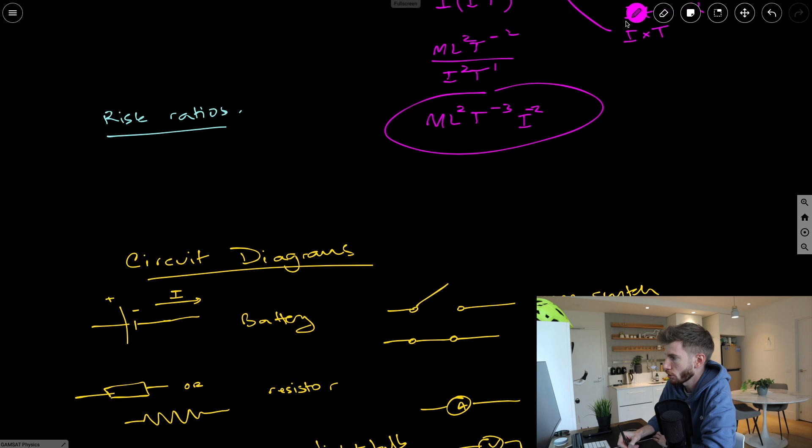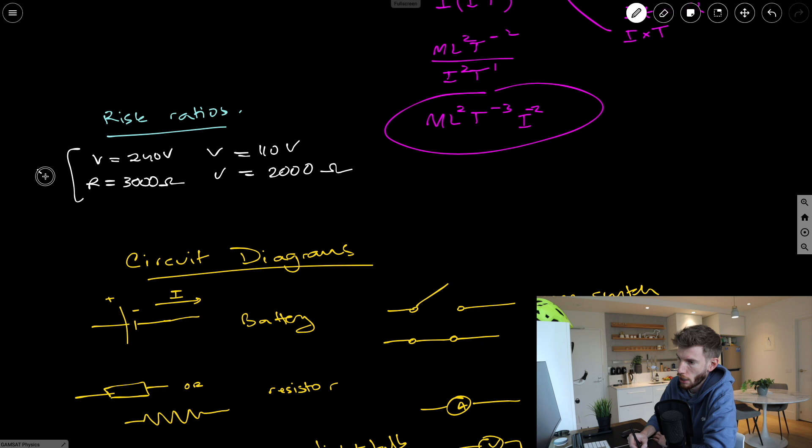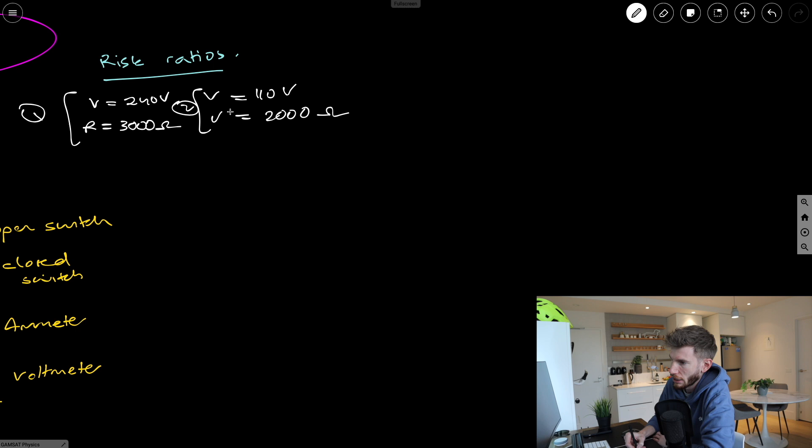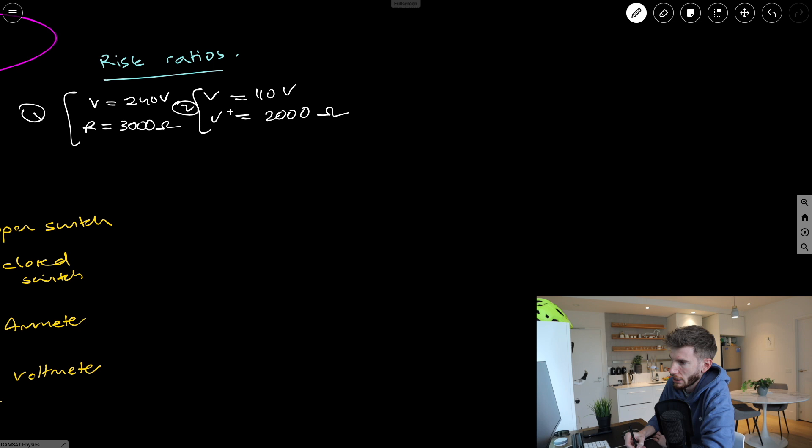The second application that we can look at is risk ratios. So we know that with electrical circuits, the real risk is not with the voltage, but with the current, higher current is the bigger issue. So they often have questions where they give you certain scenarios, so voltage, let's say is 240 volts, and then the other voltage is going to be 110 volts. And then what they tell you is that the relative resistance in each case, let's say this one is 3000 ohms, and then this one here is 2000 ohms, like that. And they say, what's the ratio, right? So let's call this set number one, and let's call this set number two.